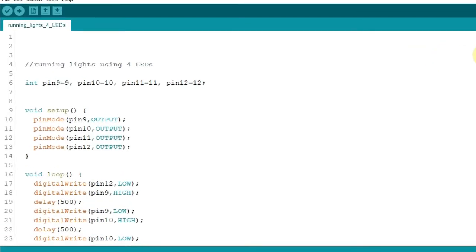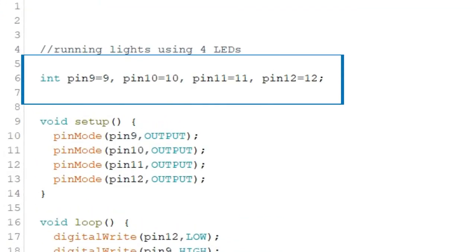For the code, we simply declared four variables, one for each of the LEDs. Note also the way we declared the variables. This is another way to declare more than one variable on a single statement. We just separate each variable name with a comma.